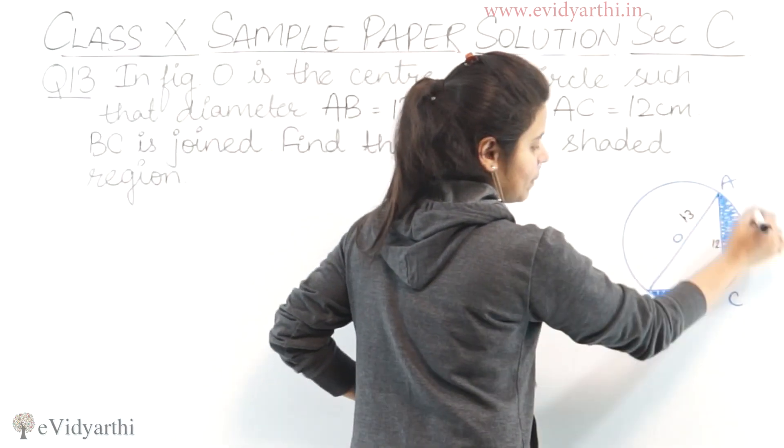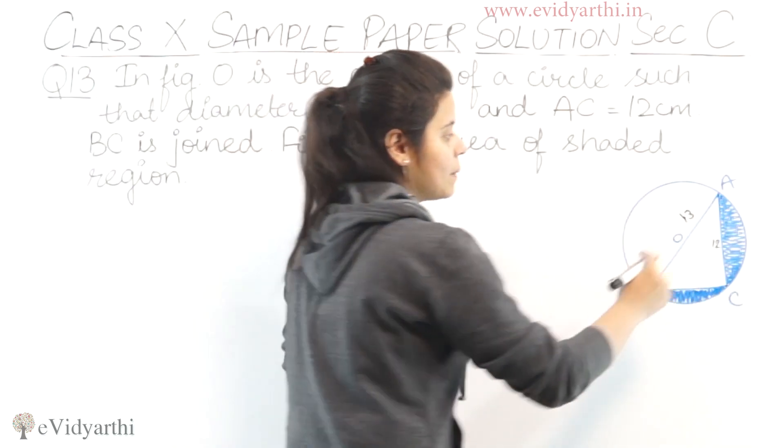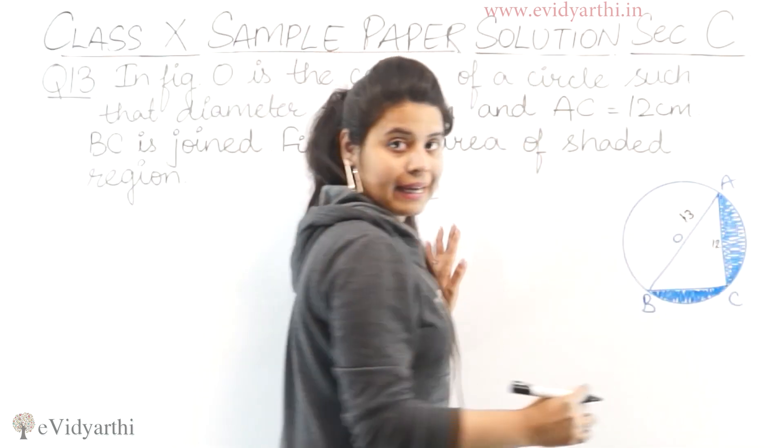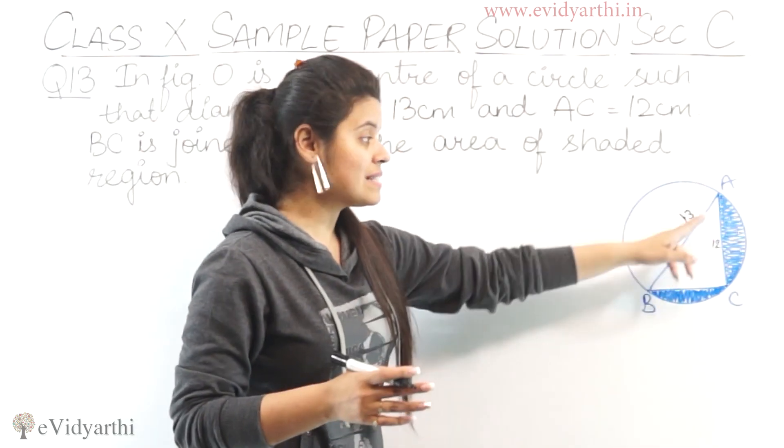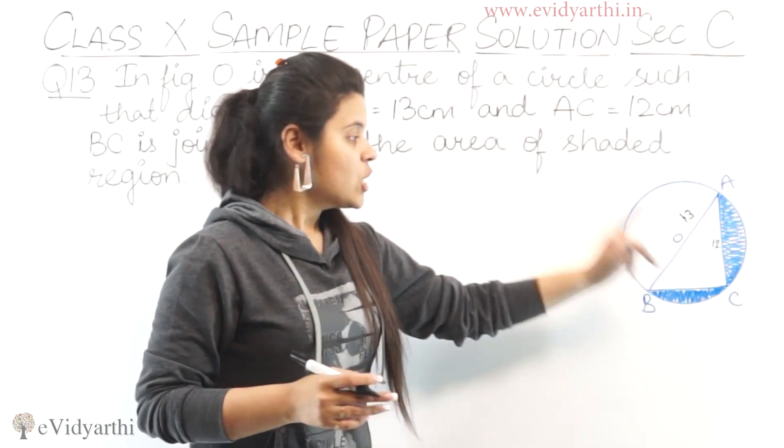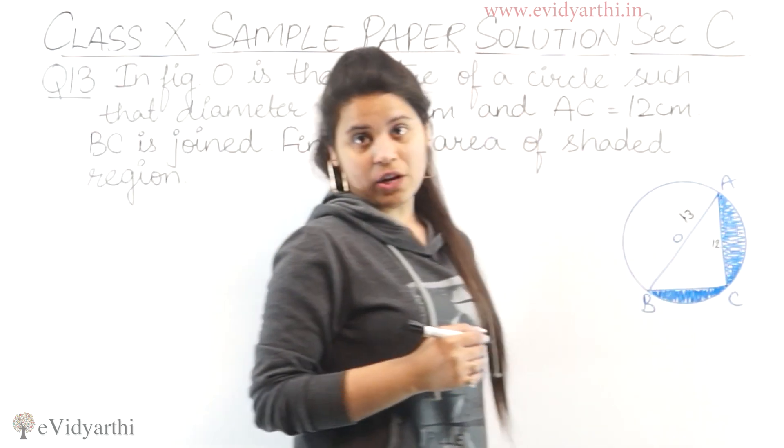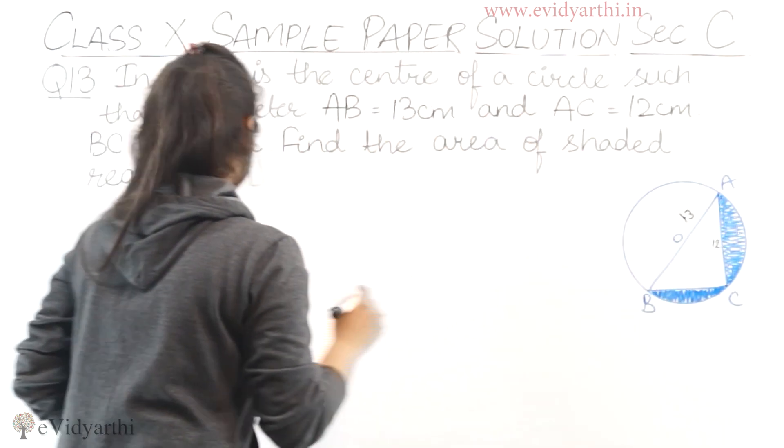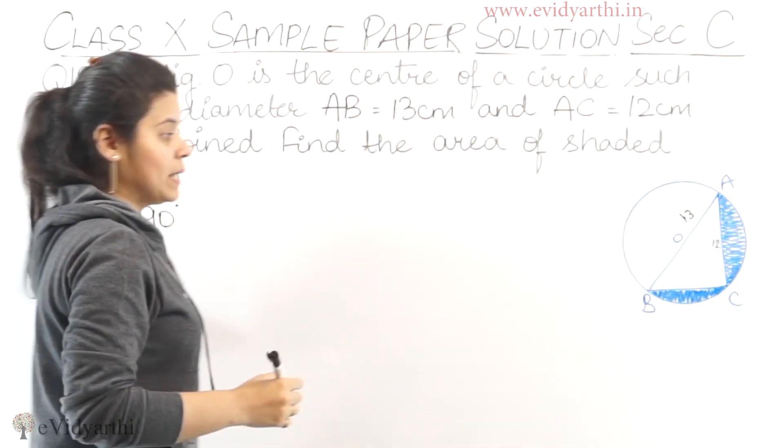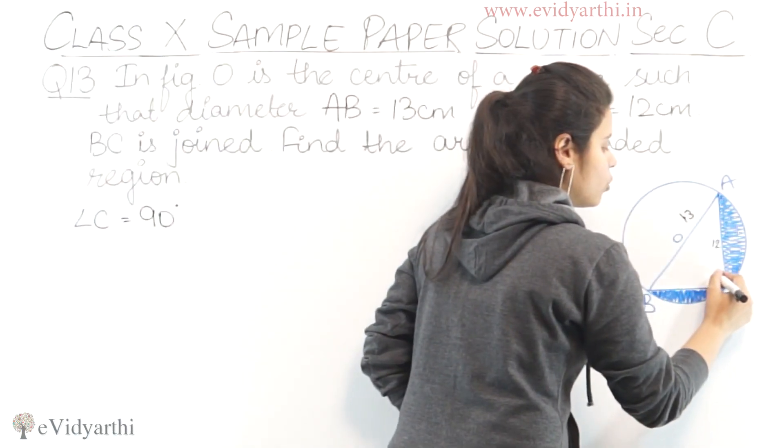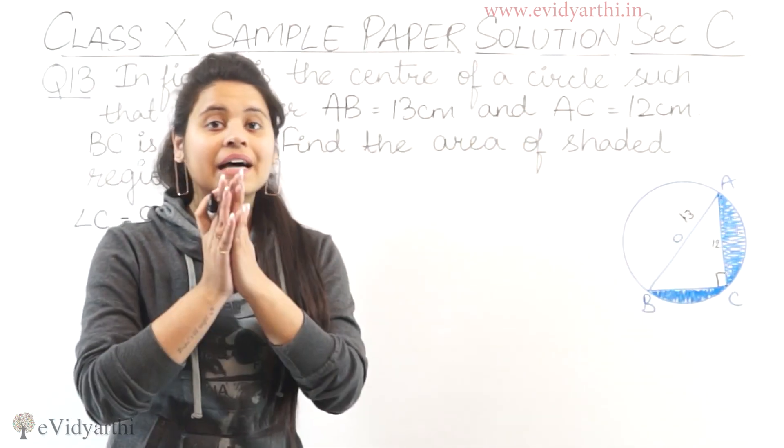For that, I don't know BC's length. So the first thing we find is that angle C is equal to 90 degrees, because the angle in a semicircle is always a right angle.